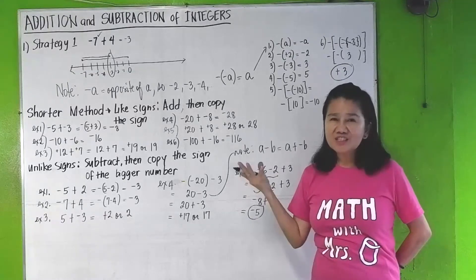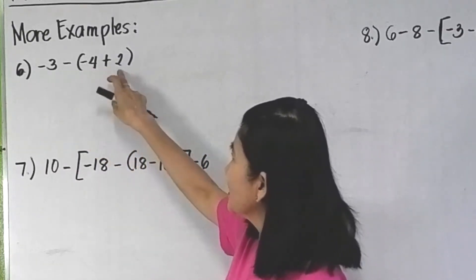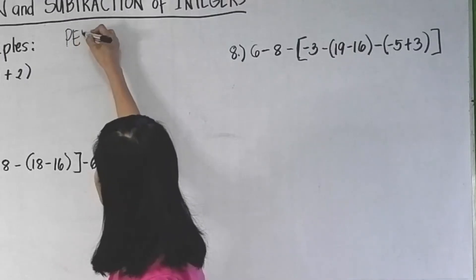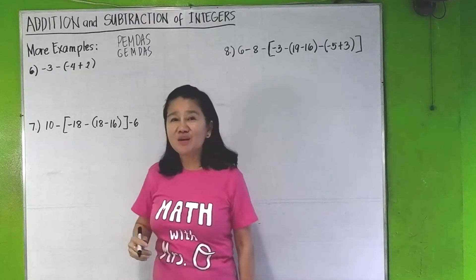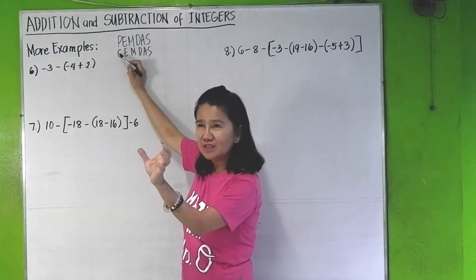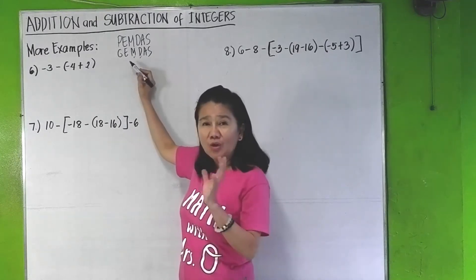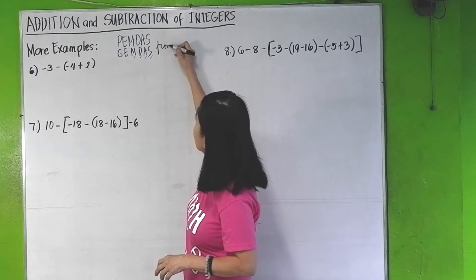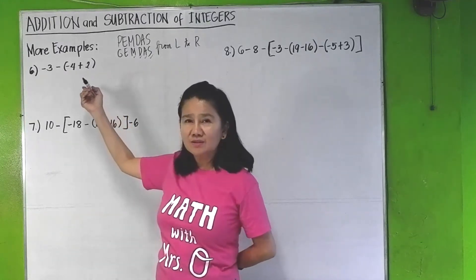In problem 6, we have negative 3 minus the quantity negative 4 plus 2. In this case, we always have to follow the PEMDAS rule — others use GEMDAS, it doesn't matter. P or G stands for parentheses or groupings, meaning you do all the ones in the groupings first. If there are several groupings, you do the innermost first. Let's solve this.